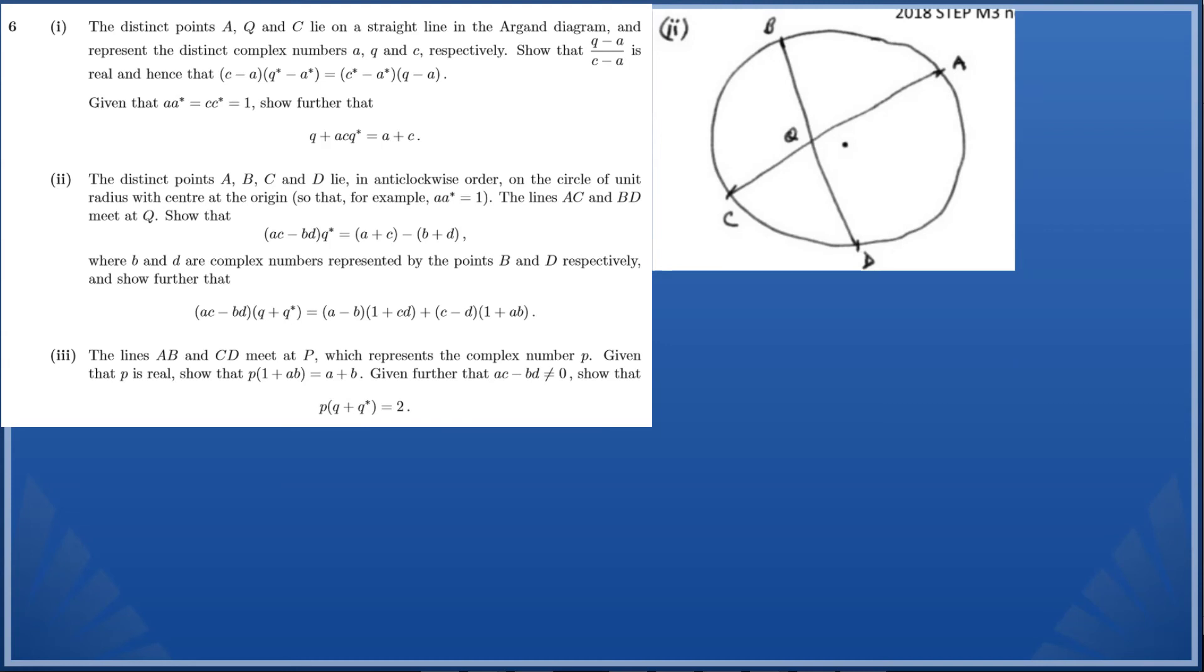Now let's look at part two of question 6. You've got the distinct points A, B, C, and D, and they all lie in anti-clockwise order on the circle of unit radius with center at the origin. So aa* = 1, and the lines AC and BD meet at Q. Now we need to show that (ac-bd)q* = (a+c)-(b+d), where b and d are complex numbers represented by the points B and D respectively.